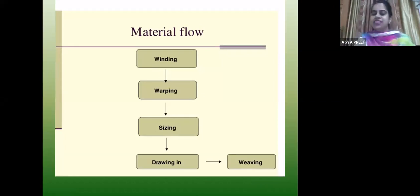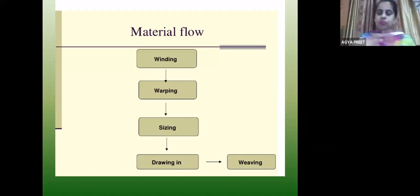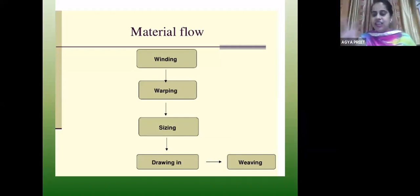In spinning, we put cotton in the first stage, then it comes to the bales — that process is ginning. Then there are different machines in the spinning room that draft the fiber bundle into yarn. After the final spinning process, in ring spinning we get the yarn.